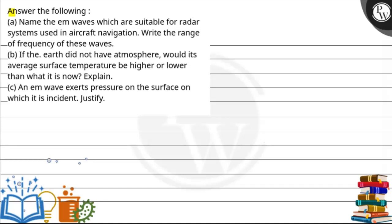Hello, our question is: answer the following. Part A asks — name the EM waves which are suitable for the radar system used in aircraft navigation, and also give the range of frequency of those EM waves.